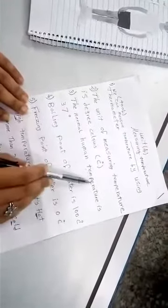The normal human temperature is 37 degrees. Normal human temperature means the natural body temperature of a person is 37 degrees.